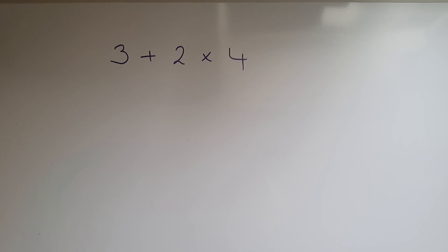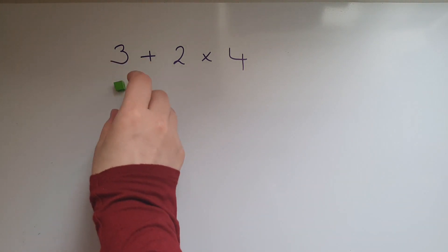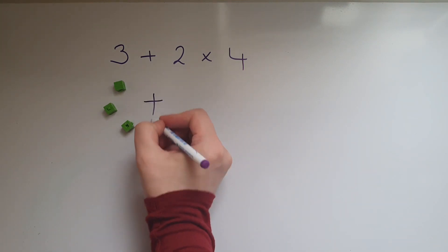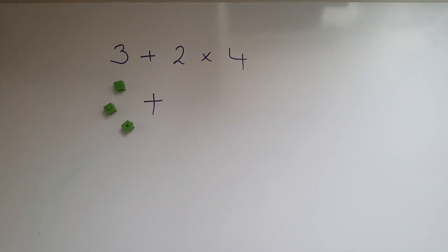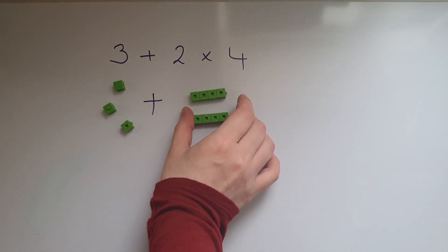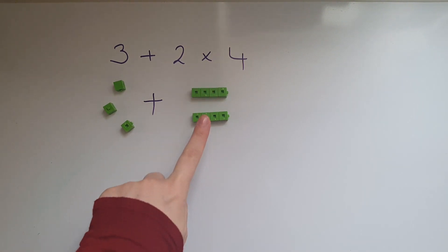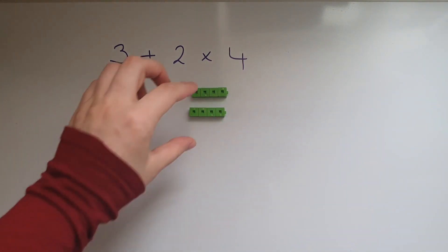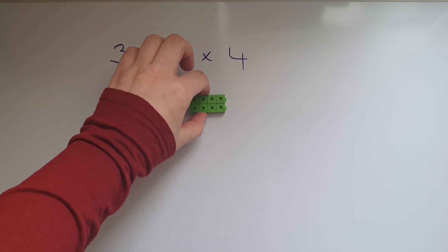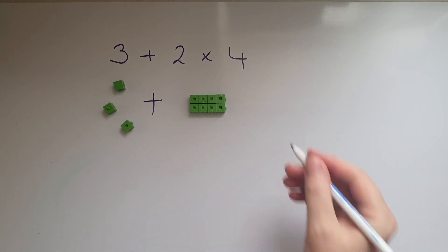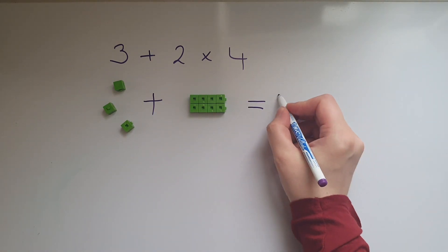If I just represent what this means, it will help us decide. It says 3 add 2 lots of 4, which I'm going to show as 1 lot of 4 and another lot of 4 — 2 lots of 4. That equals 11.